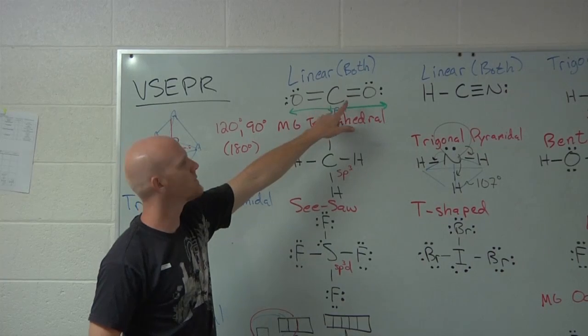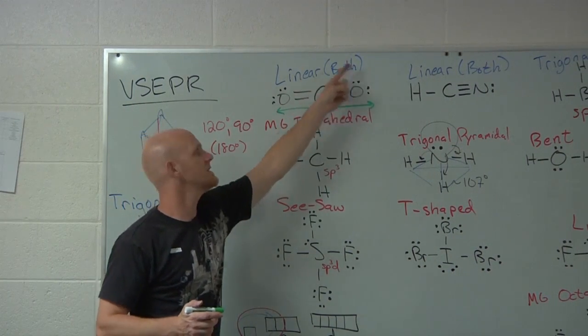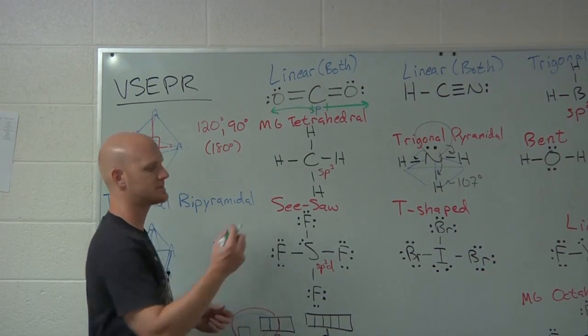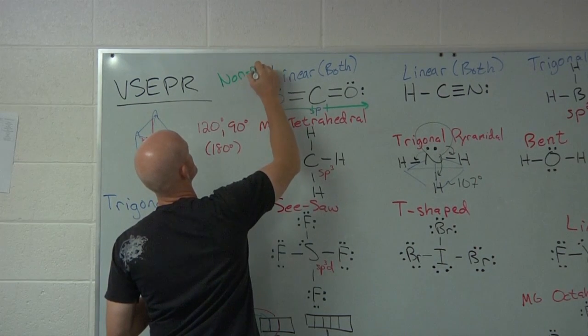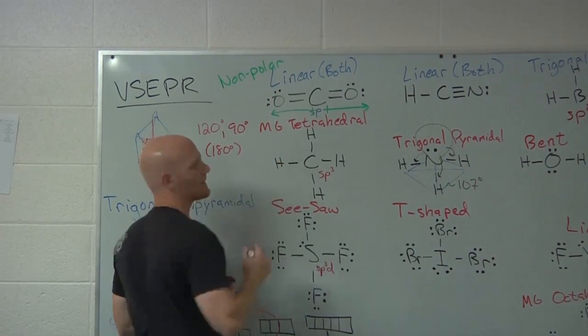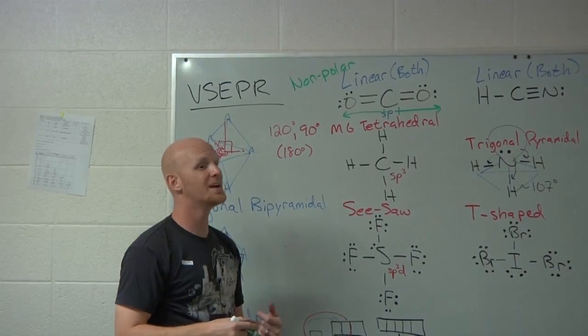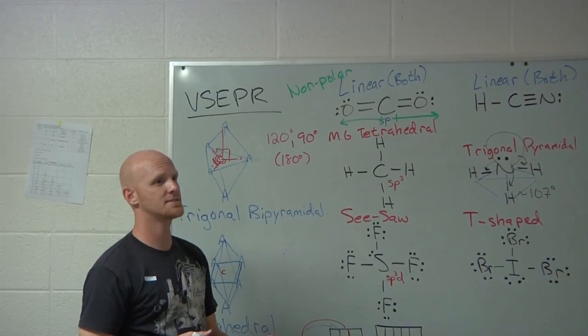So when they cancel, when the bond dipole vectors cancel, even though that bond is polar and that bond is polar, the entire molecule as a whole is non-polar. And so now you can't just know when a bond is polar. You actually got to be able to tell based on geometries if the entire molecule is polar or not.